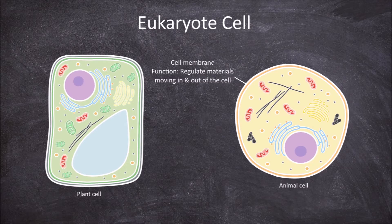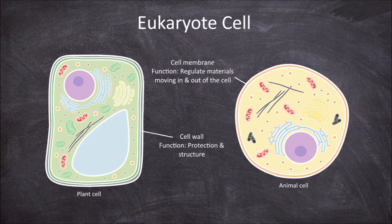Plant and fungi cells also have on the outside of the cell membrane a cell wall. The cell wall in plants is a rigid layer lining the outside of the cell that is composed of cellulose, which is a structural polysaccharide. The function of the cell wall is to provide protection to the cell.